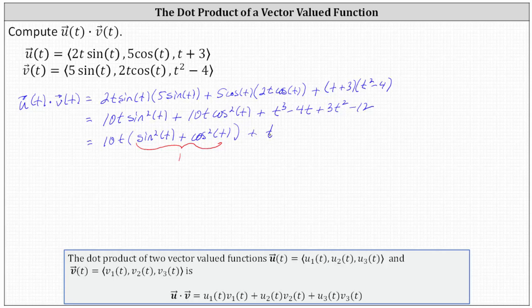And we still have plus t cubed minus four t plus three t squared minus 12. Simplifying, because sine squared t plus cosine squared t is equal to one, we now have ten t plus t cubed minus four t plus three t squared minus 12.